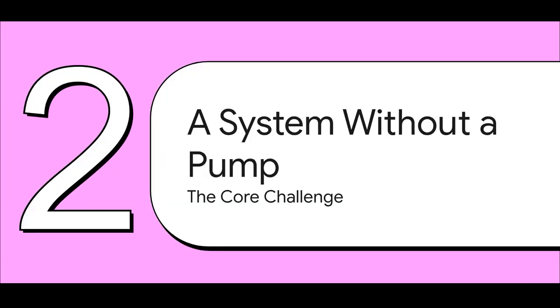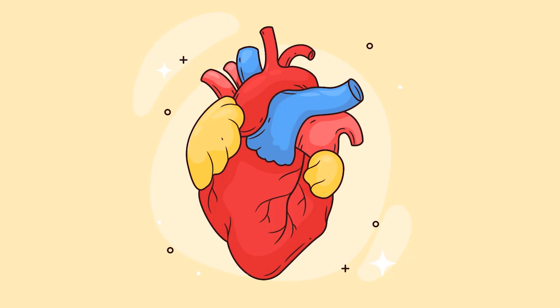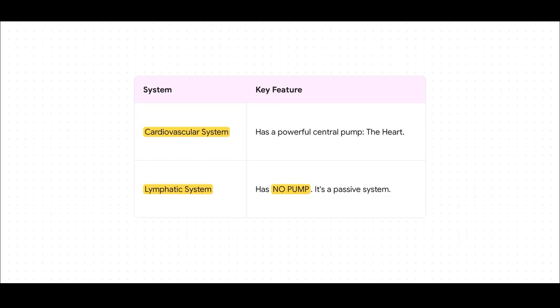Okay, but here is the catch. This is the big aha moment. This entire vital system has one major, and I mean major, design flaw. It makes it completely dependent on you. And this slide says it all. Your cardiovascular system has the heart, a powerful central pump that's always working. The lymphatic system, it has nothing, no pump. It's a completely passive system, just trying to fight gravity all day with no engine to help it out.